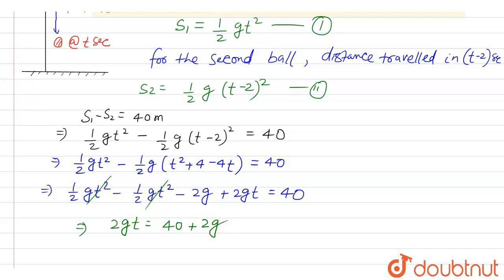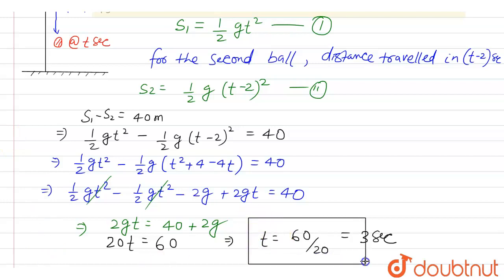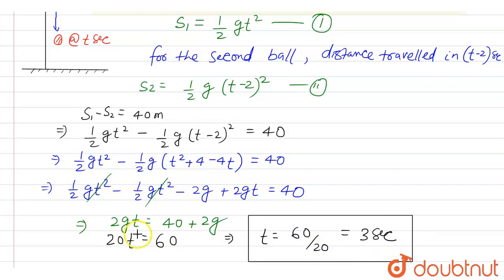Taking g = 10 m/s², we get: 20t = 40 + 20 = 60, which implies t = 60/20 = 3 seconds. So after 3 seconds of dropping the first ball, the two balls will be separated by a distance of 40 metres.